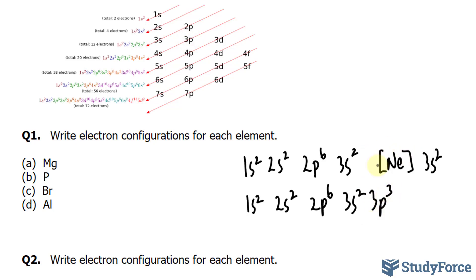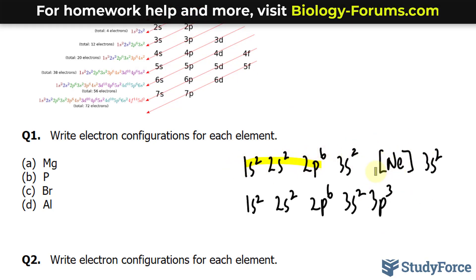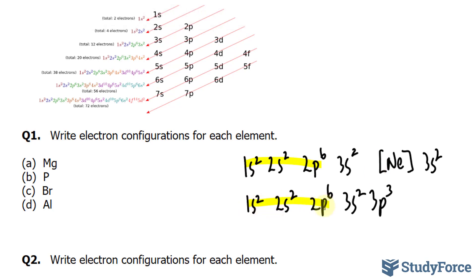Of course, you can shorten this the same way we did here. Recall that all of this was neon, so all of this will be neon, and you write these next to it.